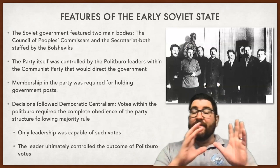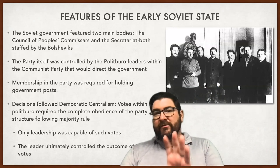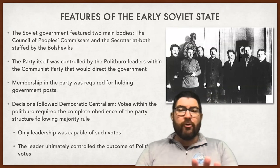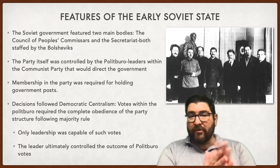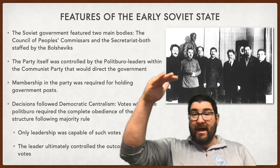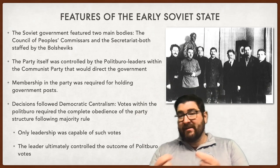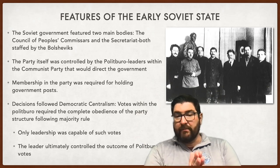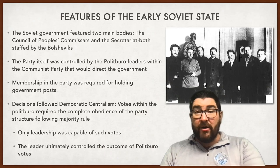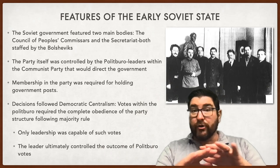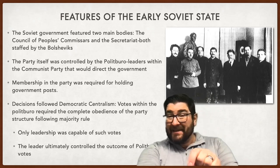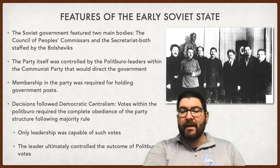In this early Soviet state, the government featured two main bodies: the Council of the People's Commissars and the Secretariat, both completely staffed by Bolsheviks. The party itself was controlled by the Politburo — the leaders of the Soviet Communist Party who directed the government. Membership in the party was required for any government post. Decisions followed democratic centralism, meaning votes within the Politburo required obedience all the way down, with no opposition allowed after a vote was taken. Ultimately, leadership followed Vladimir Lenin and later Joseph Stalin.